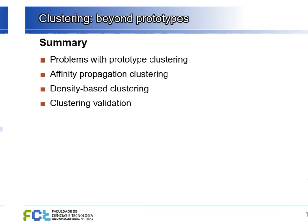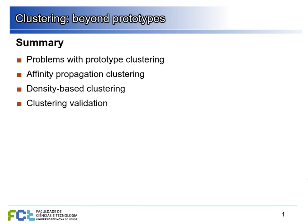In the previous lecture we saw an example of clustering using prototypes. K-means is a prototype-based clustering because each centroid is a prototype that represents all the clusters. Now we're going to look at some problems with prototype clustering. We'll see affinity propagation, which is also prototype-based and solves one of the problems of K-means — the need to specify how many clusters we want from the beginning. Then we'll go beyond prototypes into density-based clustering, and also discuss how we can validate clustering.